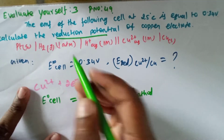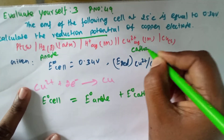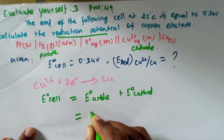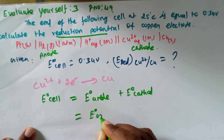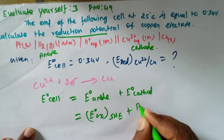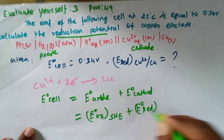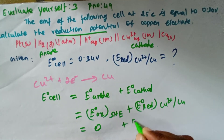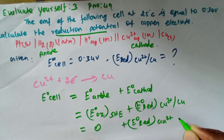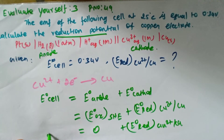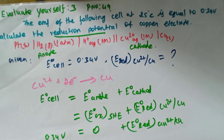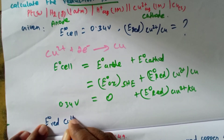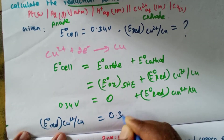We will learn something about the anode compartment and cathode compartment. The E0 is equal to 0 for the oxidation of the standard hydrogen electrode, plus E0 reduction potential value of copper 2 plus to copper. This value is 0 plus reduction potential of copper 2 plus to copper. We write the value: 0.34 volt. This value of the standard hydrogen electrode is equal to 0, so E0 reduction potential value of copper 2 plus to copper is equal to 0.34 volt.